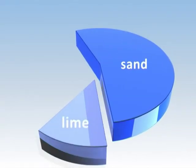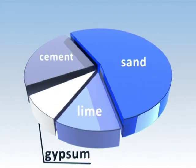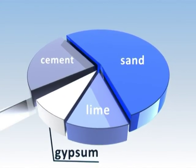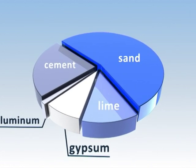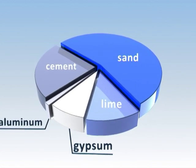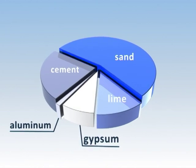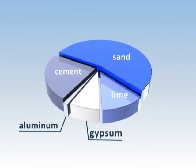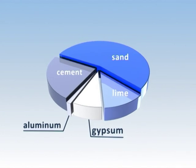Sand has the biggest percentage in the raw mass production. Lime and cement are responsible for the strength of a finished product. Aluminum powder spread helps in the fermentation process and pore formation. Precise choice of composition has a crucial influence on the properties of the end product and its quality.